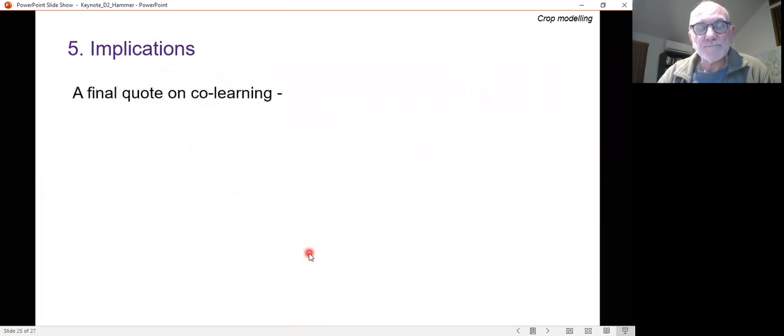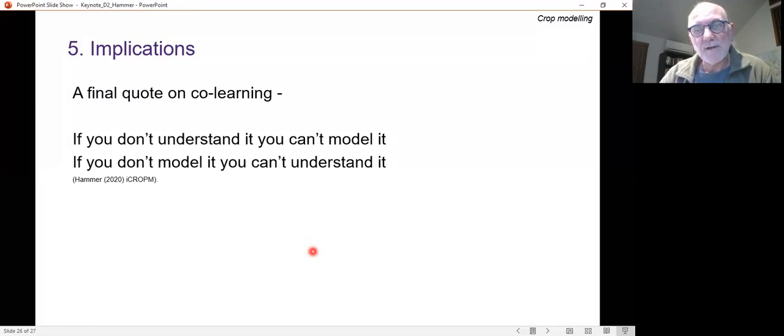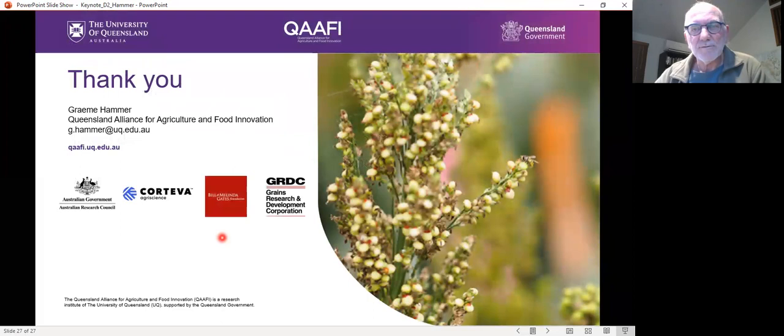So just a final quote on co-learning, which I think is really critical in this is that if you don't understand it, you can't model it. And a lot of theoreticians or basic scientists might argue that to you, but the retort is if you don't model it, you can't understand it because often you don't really get a good understanding of the dynamics and the interactions that are critical. So with that, I thank you for listening and I hope you're enjoying the seminar series.